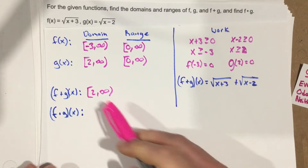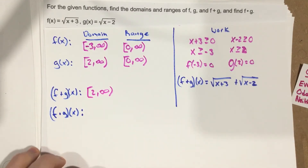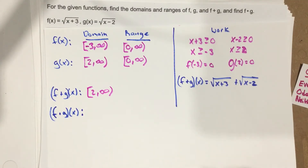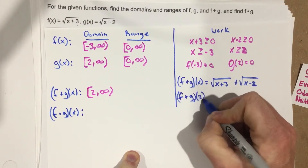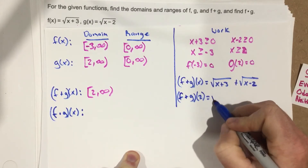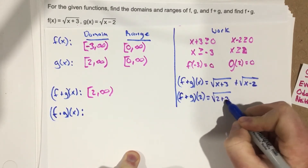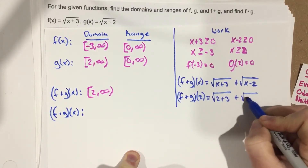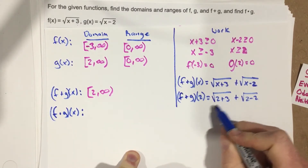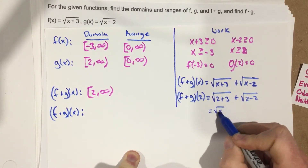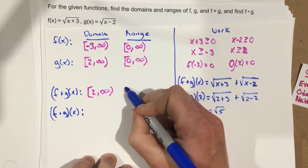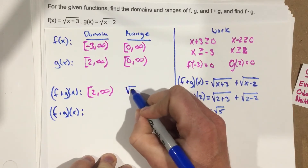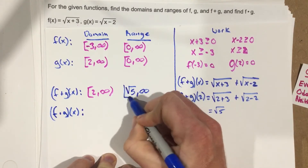Now we need to find the range. We plug in the smallest domain value: f plus g of 2 equals root of 2 plus 3 plus root of 2 minus 2. That's root 5 plus 0, which is root 5. So our smallest y value is root 5, and the range goes from root 5 to infinity, including root 5.